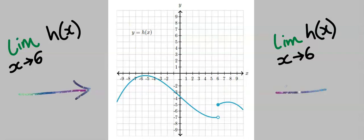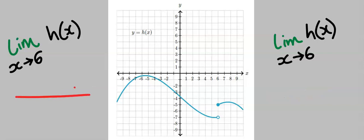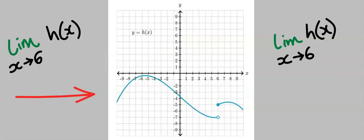Approaching the function h(x) from the left, we consider only the left-hand line. The limit as x tends to 6 aligns with minus 7 on the y-axis. Hence, from the left-hand side, the limit of h(x) as x tends to 6 is equal to minus 7.